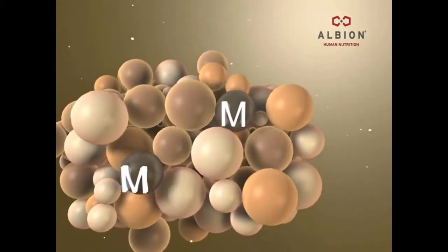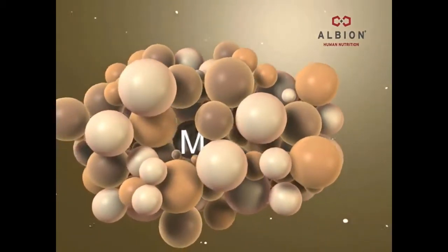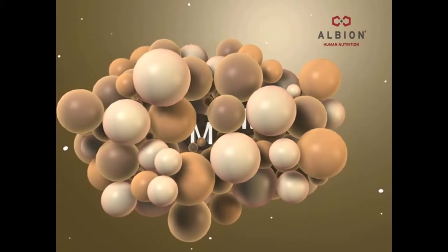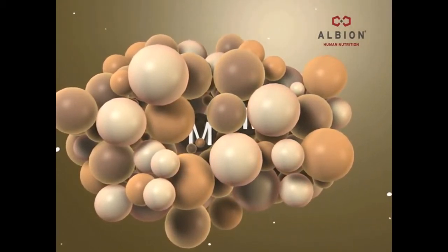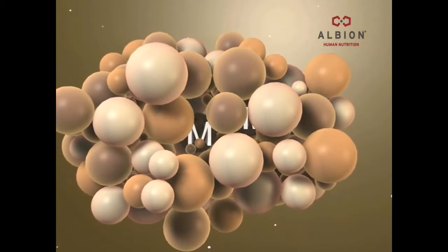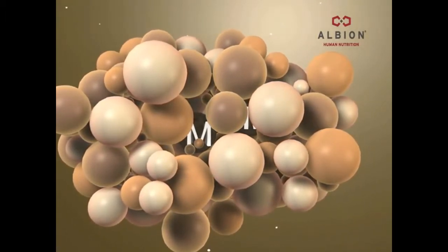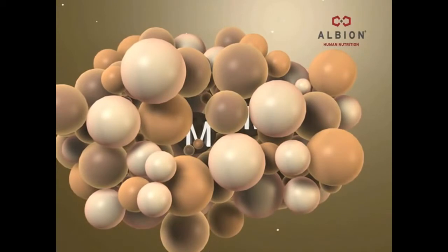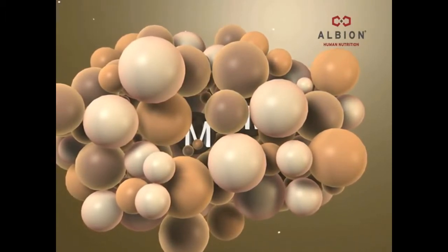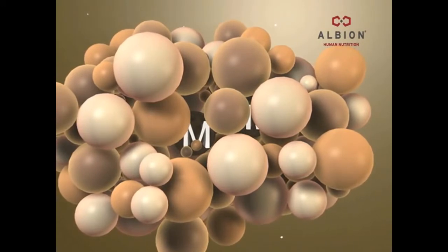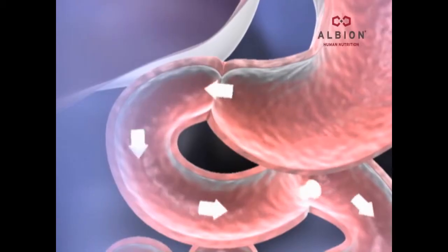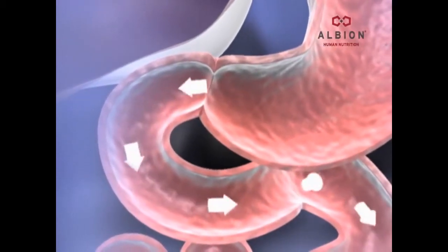As the dissociated mineral continues through the digestive process, it carries a natural ionic charge with it. This charge makes it attract to other charged particles that have been eaten, such as vegetables, fiber, and fats. These food particles will sequester the mineral, rendering it unavailable for absorption and utilization by the body. This diminished mineral availability reduces the effectiveness of the inorganic mineral salt form.